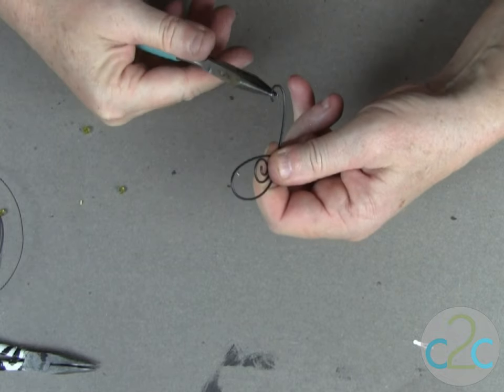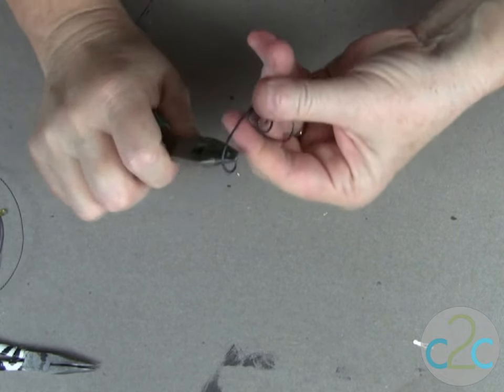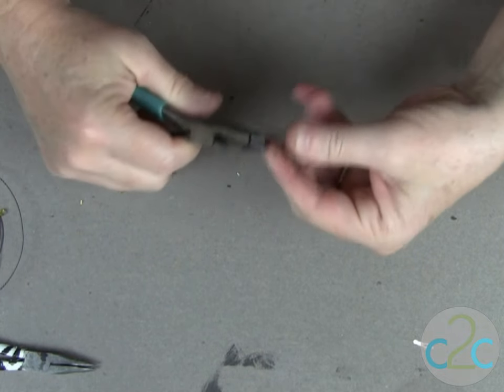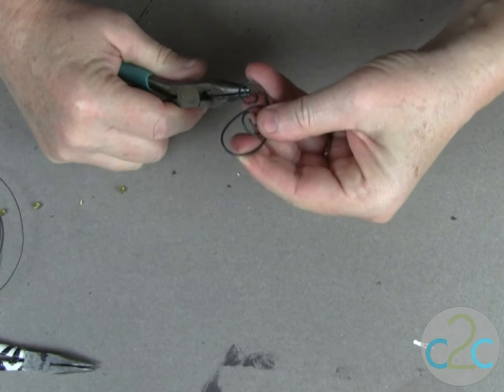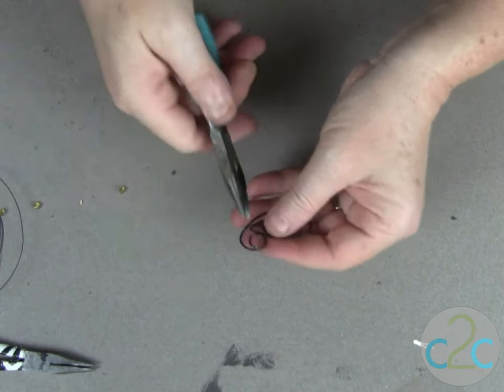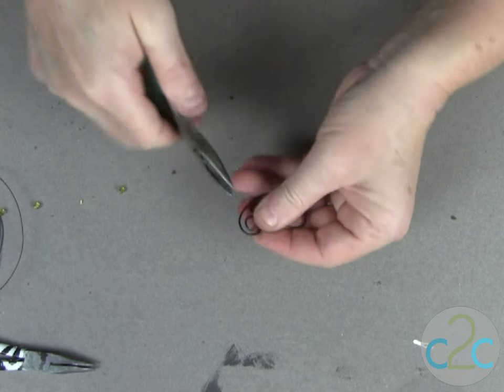So I'm going to take the end of that wire that I just cut and I'm going to make it into a coil and this is going to finish out the bottom part of our loop.